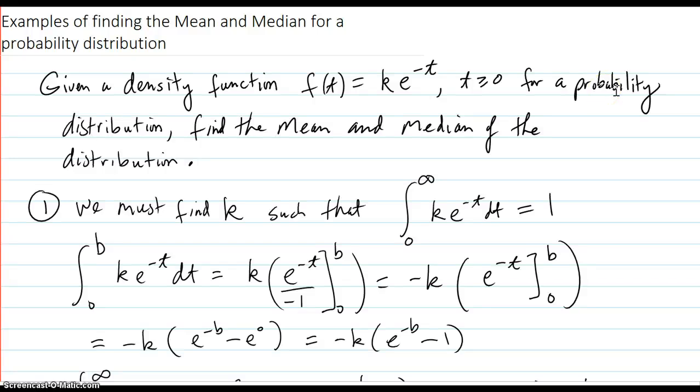Examples of finding the mean and median for a probability distribution. Let's say we have a density function for the distribution, f(t) = ke^(-t), and it's only good on t greater than or equal to zero. Find the mean and median of the distribution.